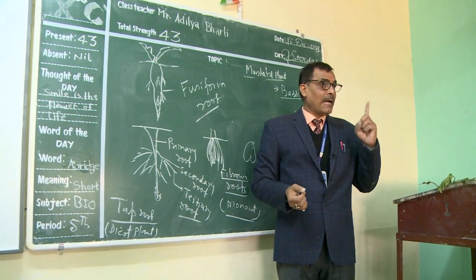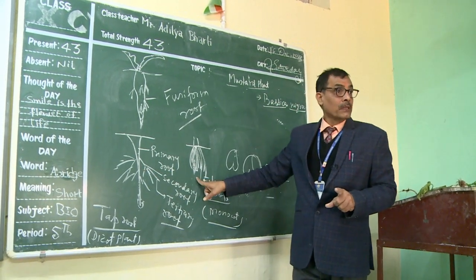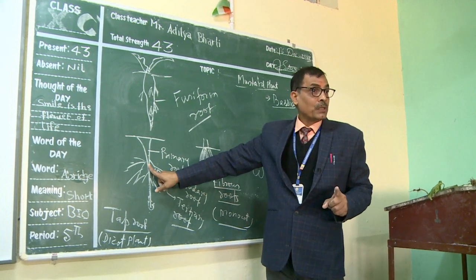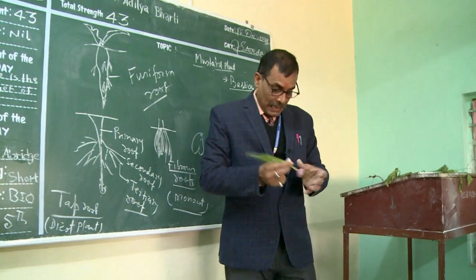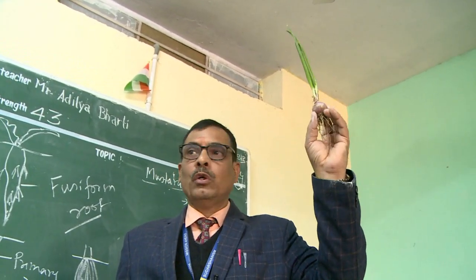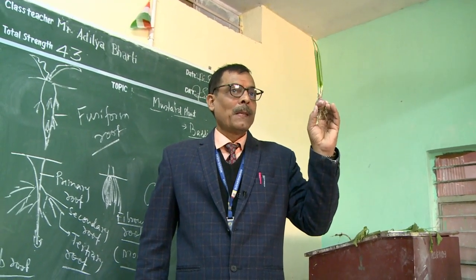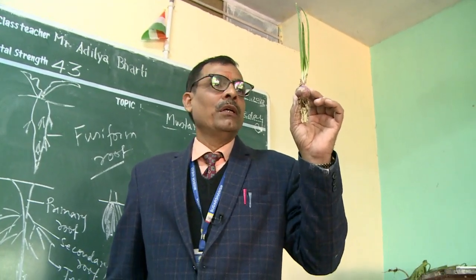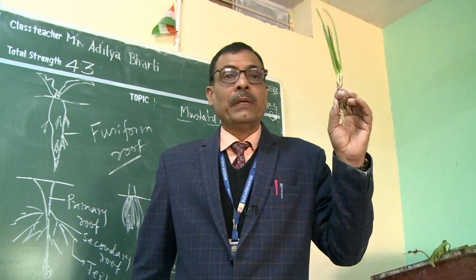We discussed comparative analysis between dicot and monocot at the root level, and also between a simple tap root and a modified tap root. Before ending the class, I have one question: Is the onion a root or a stem? Students answered: modified stem — and you are all correct. This is indeed a modified stem. Next class, I will discuss the next part.